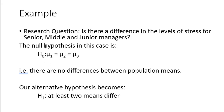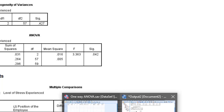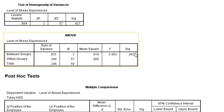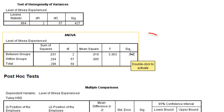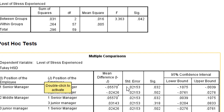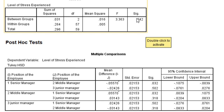ہمارا null hypothesis تھا H0: μ1 = μ2 = μ3 — یعنی the means of the three groups are equal or there is no difference in the means۔ یہ null hypothesis reject ہو گیا، جس کا مطلب ہے کہ at least two means differ — ہو سکتا ہے تینوں means آپس میں مختلف ہوں۔ اب ہمیں دیکھنا ہے کہ کون سے means ہیں جو آپس میں برابر نہیں ہیں۔